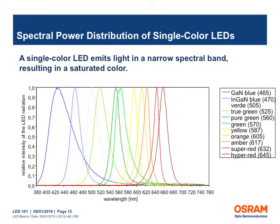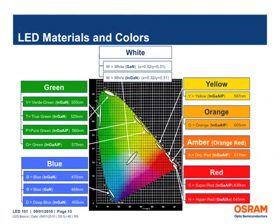A monochromatic or single color LED emits light in a narrow spectral band. The spectral power distribution is a representation of the radiant power emitted by a light source as a function of wavelength. The semiconductor material used in an LED determines its wavelength or color of light. InGaN and InGaAlP are the two primary semiconductor materials, and slight changes in the composition of these alloys changes the color of the emitted light. This image shows the various colors produced with different compositions of alloys on a CIE 1931 color chart.